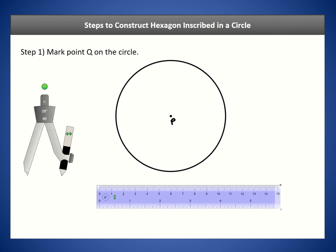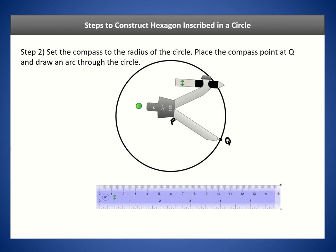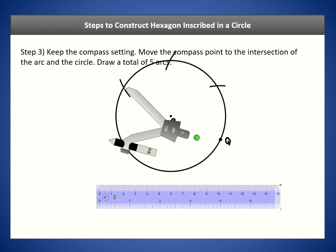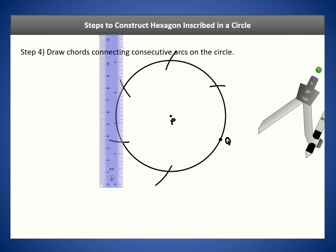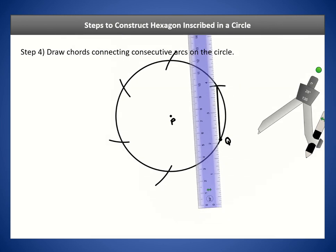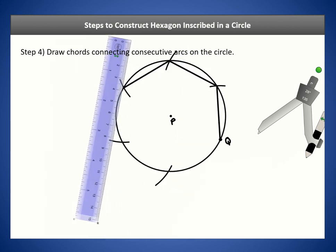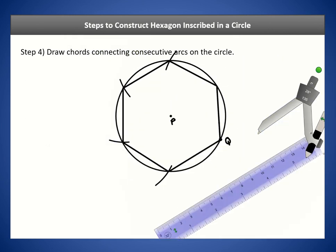Draw chords connecting consecutive arcs on the circle. Each arc gets connected to the next. When finished you'll have six sides total from the five arcs. Erase your scratch arcs to reveal the final inscribed hexagon.